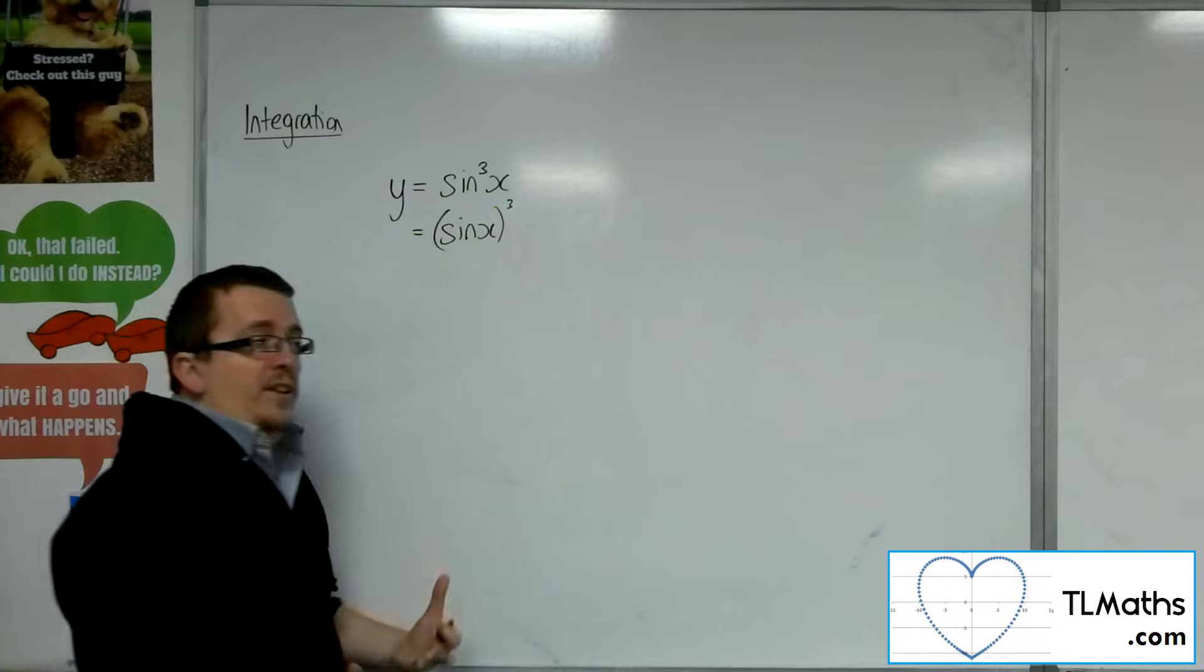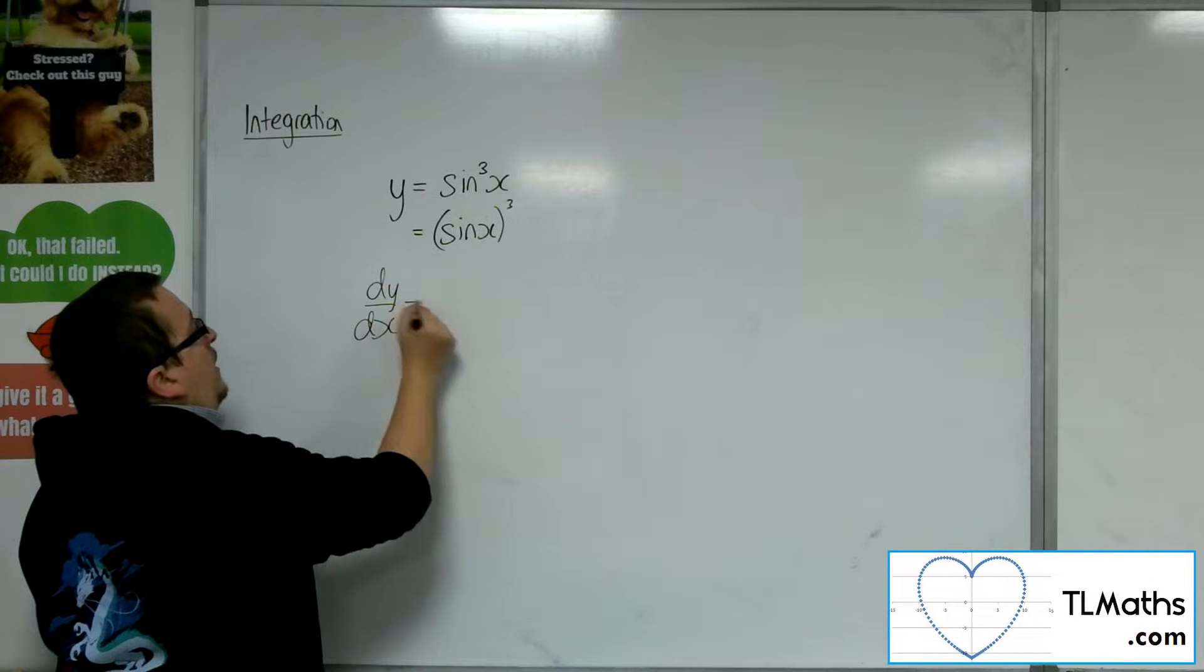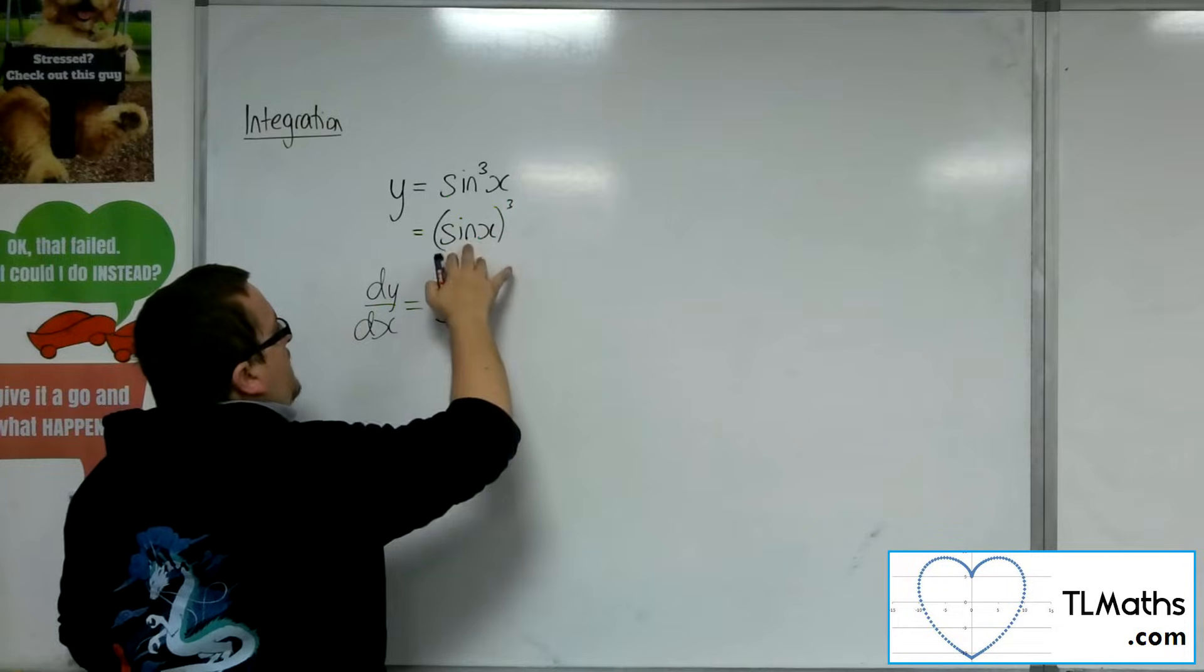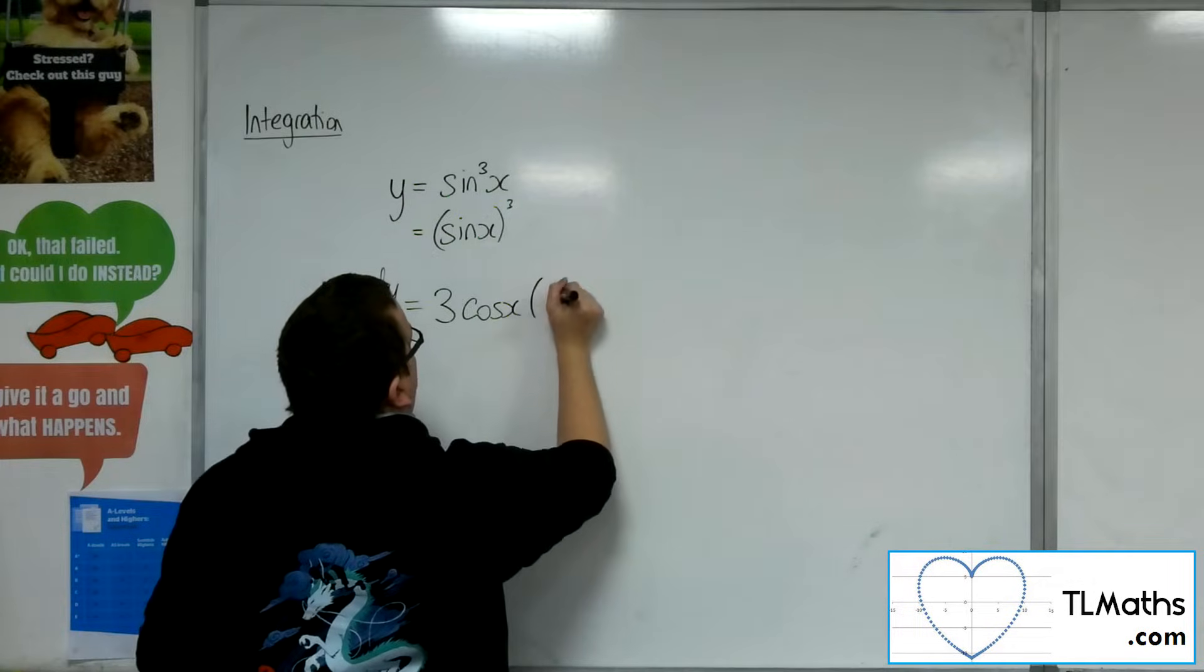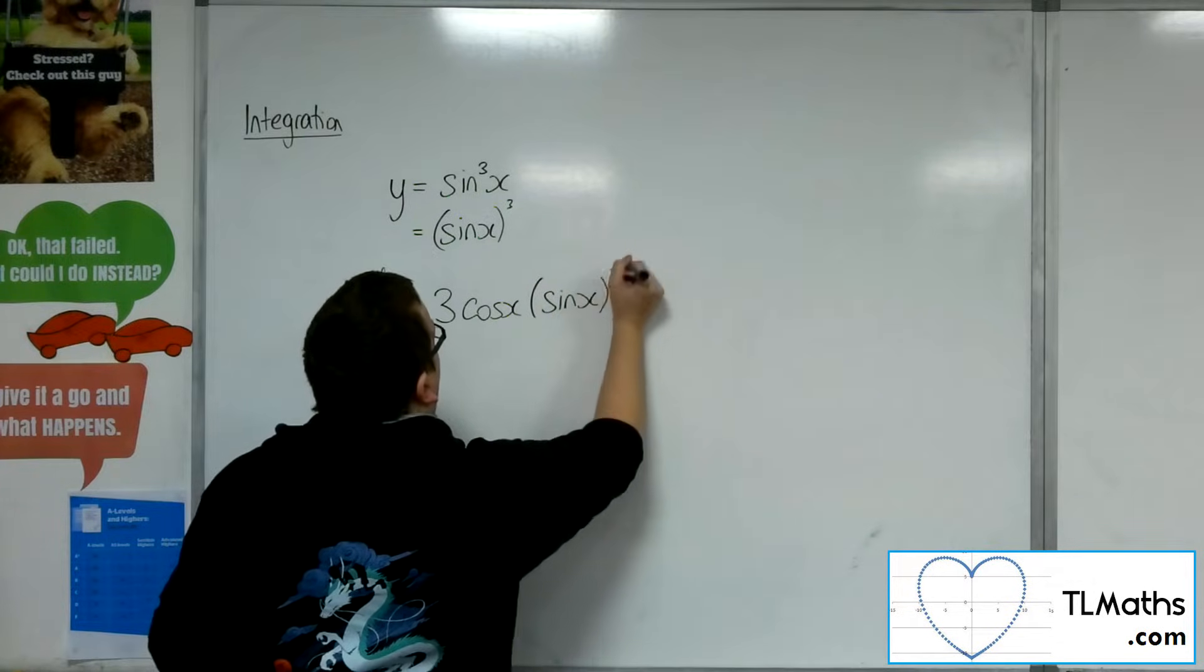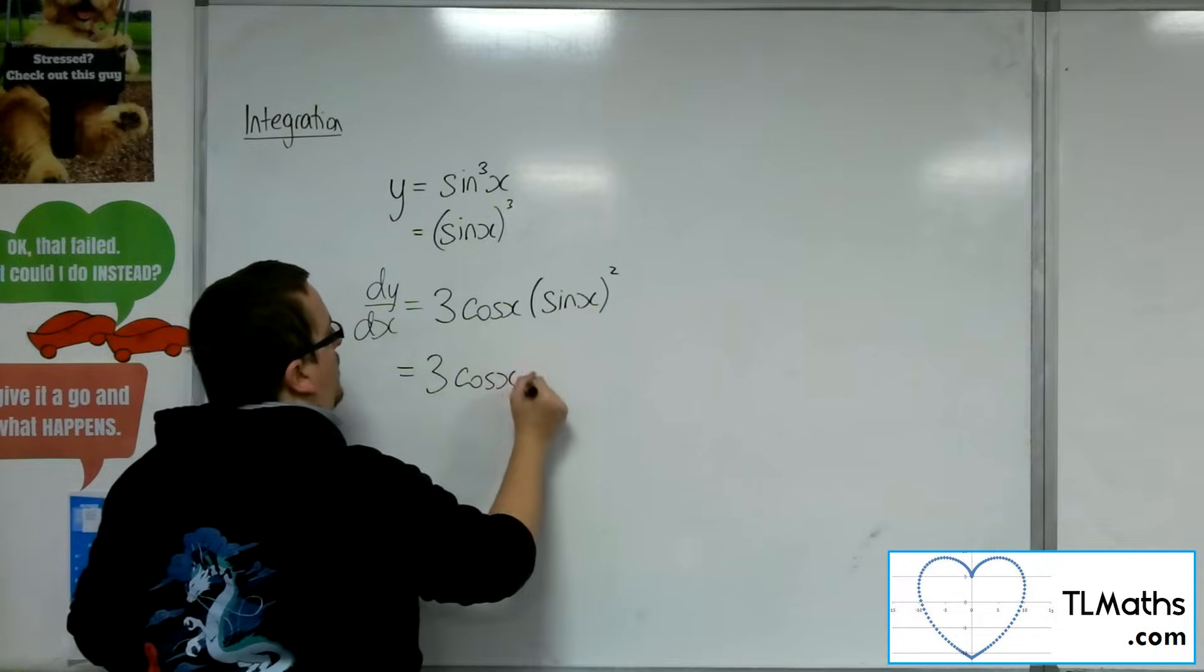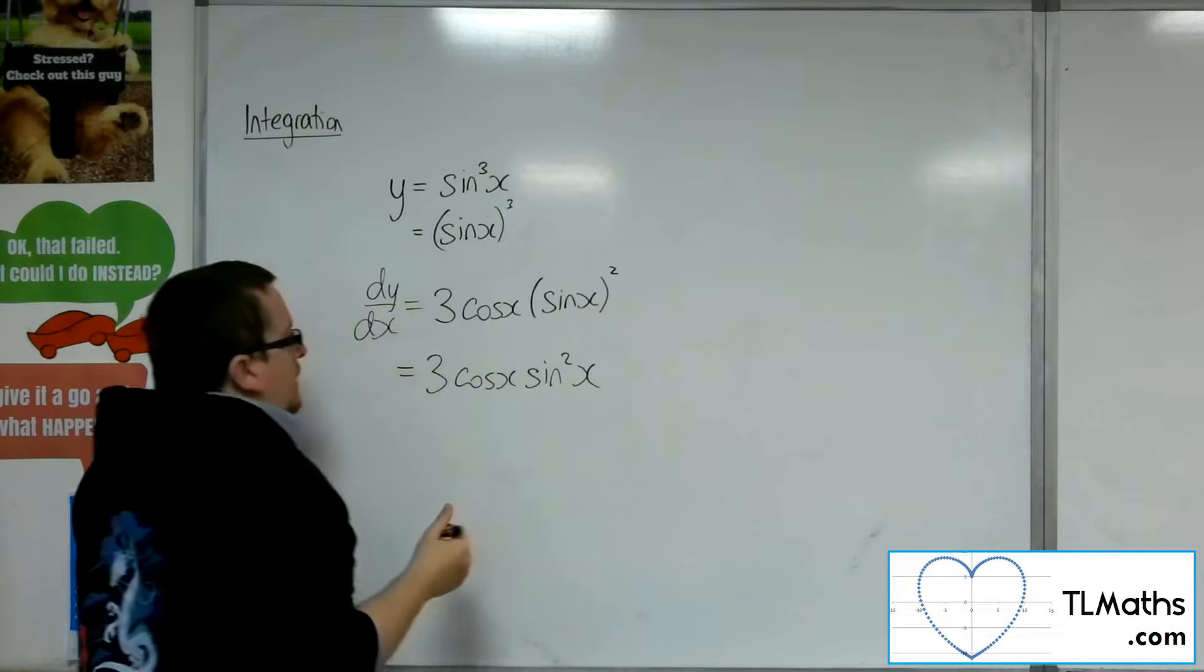So if I was to differentiate it, I could use the chain rule by looking at the power coming down to the front, the derivative of what's inside coming outside, and then just having the original function but dropping a power. So this is the same as 3 cosine of x sine squared x.